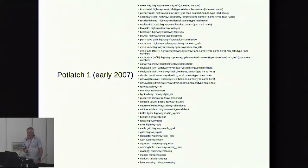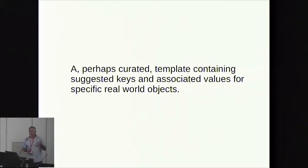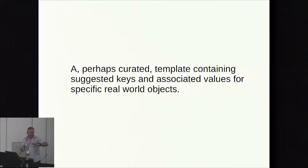The Java applet had something like 40 presets, and JOSM in late 2007 had about 180 presets. The format used by JOSM in 2007 is very similar to what it is today — in general things haven't changed that much. My definition of a preset is: a template containing suggested keys and associated values for specific real-world objects. This is slightly wrong because JOSM has utility presets that just add a couple of tags without corresponding to a real-world object.